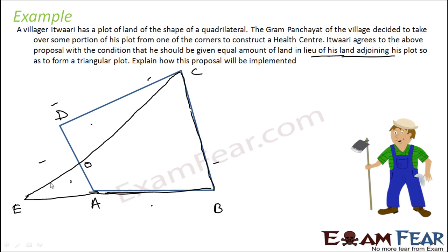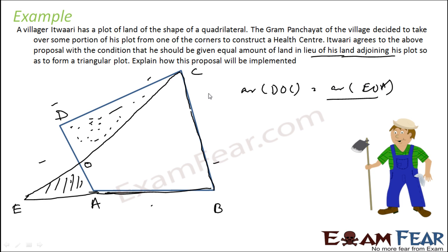So he has to get this piece of land and he has to keep this piece of land. We have to make sure that the area of EOA should be equal to area of DOC, so that the proposal holds true. DOC will be used to build the healthcare facility, and EOA — the land he gets — is adjoining his land. This new land will be C, D.